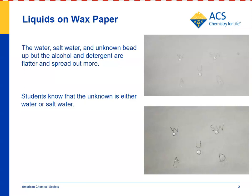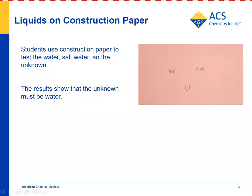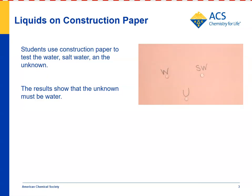Students can then go on to the construction paper to see what the unknown might be. Here, students use just the water and salt water since they look most similar to the unknown. They put water, salt water, and the unknown on a piece of pink construction paper. The water and the unknown absorb into the construction paper differently than the salt water does — the salt water just stands up and doesn't absorb much. Using both tests, kids can conclude that the unknown must be water.